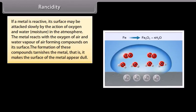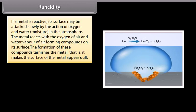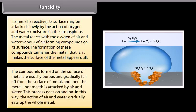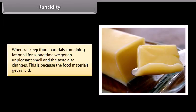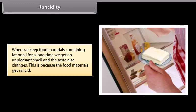If a metal is reactive, its surface may be attacked slowly by the action of oxygen and water in the atmosphere. The metal reacts with the oxygen of air and water vapor of air, forming compounds on its surface. The formation of these compounds tarnishes the metal, that is, it makes the surface of the metal appear dull. The compounds formed on the surface of metal are usually porous and gradually fall off from the surface of metal, and then the metal underneath is attacked by air and water. The process goes on and on. In this way, the action of air and water gradually eats up the whole metal. When we keep food materials containing fat or oil for a long time, we get an unpleasant smell and the taste also changes. This is because the food materials get rancid.